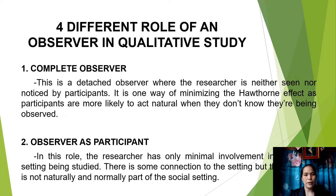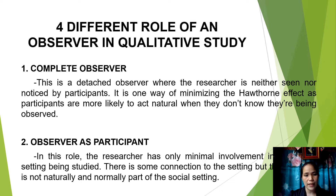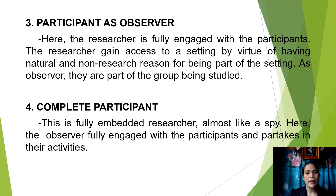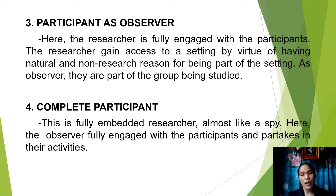Number two is observer as participant. In this role, the researcher has only minimal involvement in the social setting being studied. There is some connection to the setting, but the observer is not naturally and normally part of the social setting. The third one is participant as observer. Here, the researcher is fully engaged with the participants. The researcher gains access to a setting by virtue of having a natural, non-research reason for being part of the setting and is part of the group being studied.